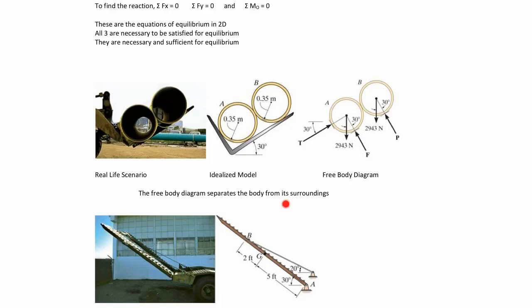The free body diagram separates the body from its surroundings. For another scenario, this would be the idealized model — a ramp with a string holding it up, mounted at one end with a mounting condition. The free body diagram separates what we care about from its environment. It will be subjected to some forces: the tension in the string, its weight, and a reaction. We take the environment, the things supporting it, away, and substitute those things with just the forces they cause.